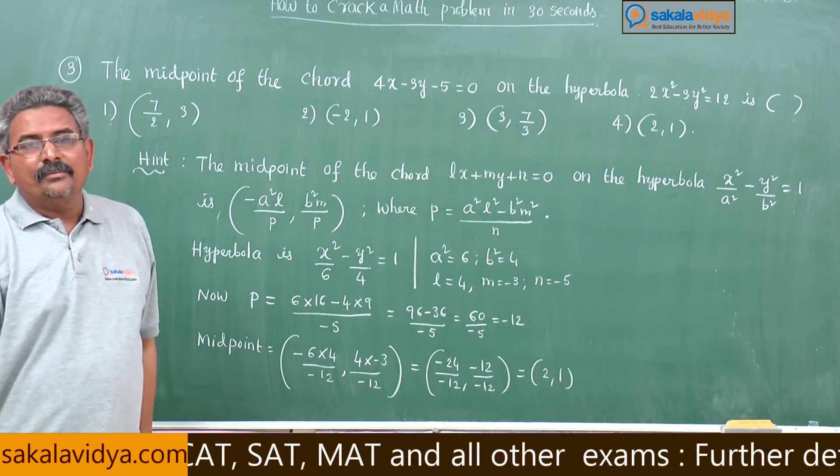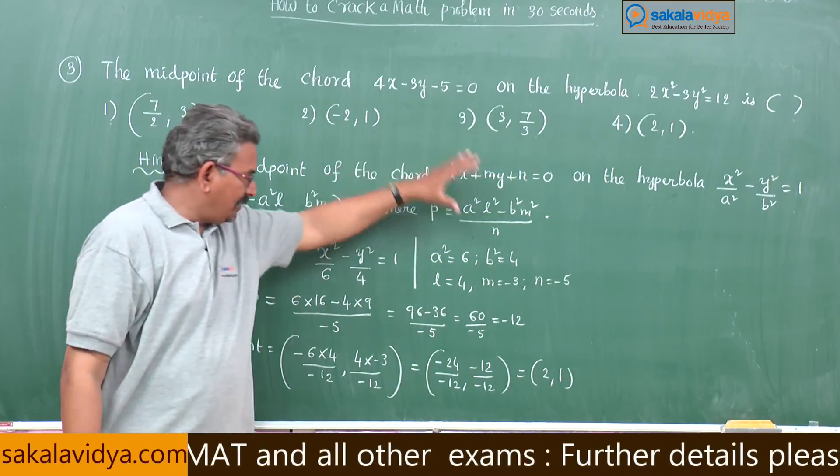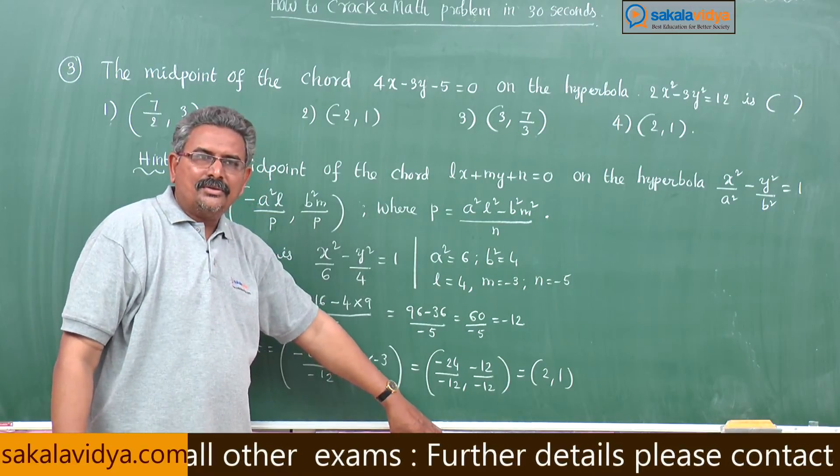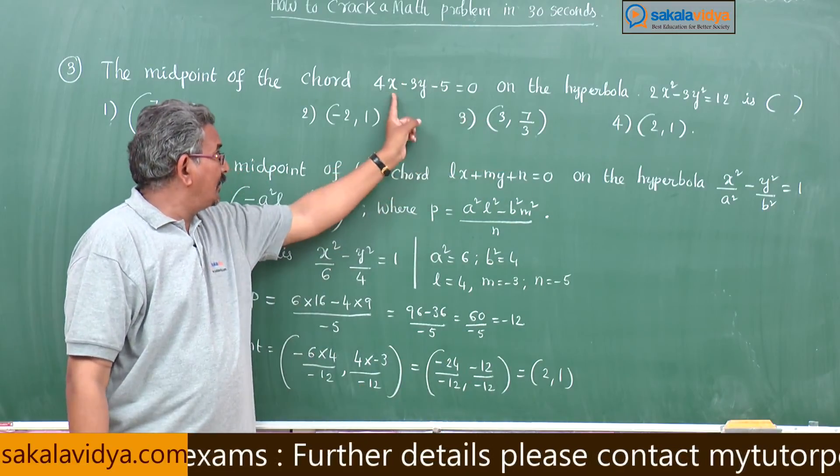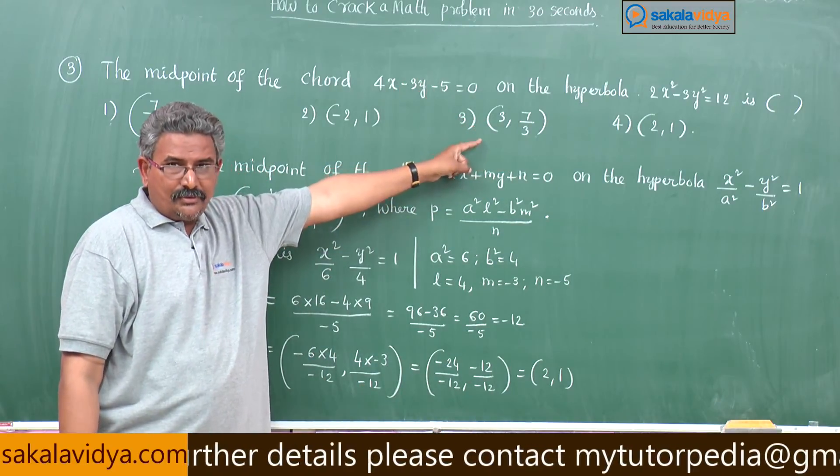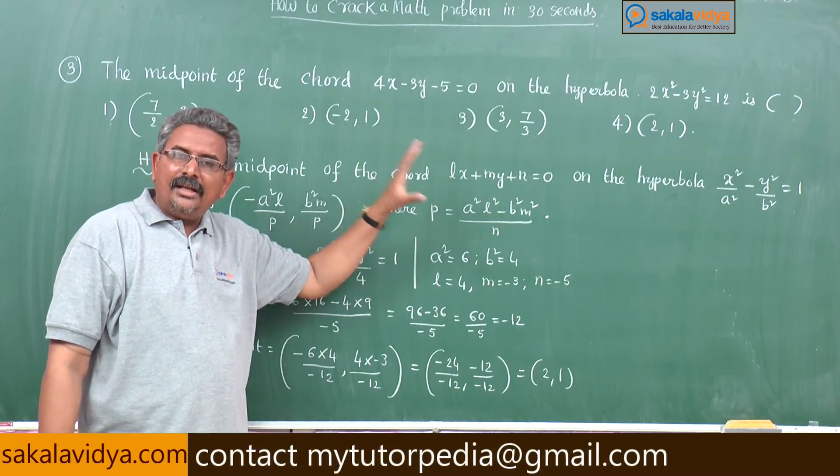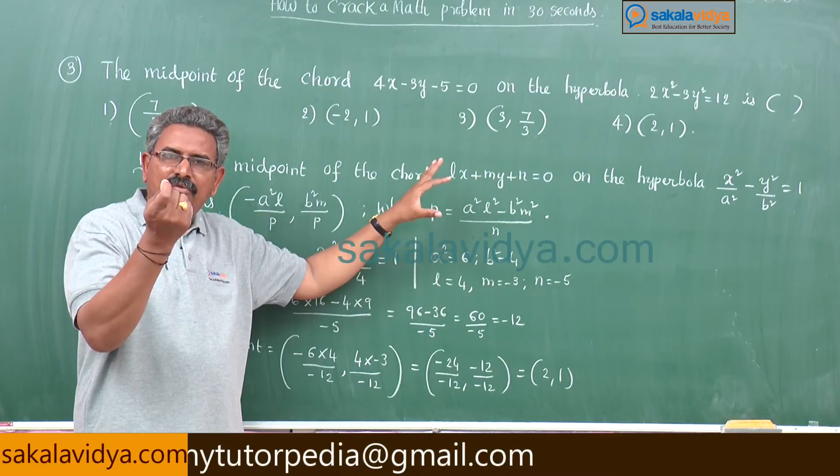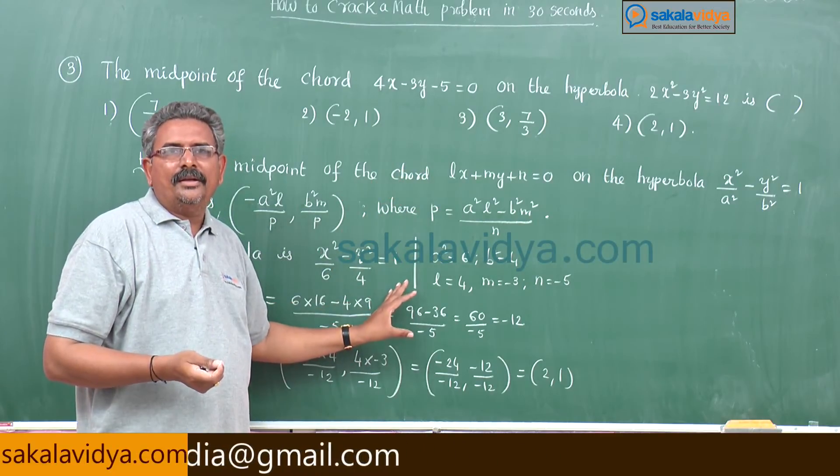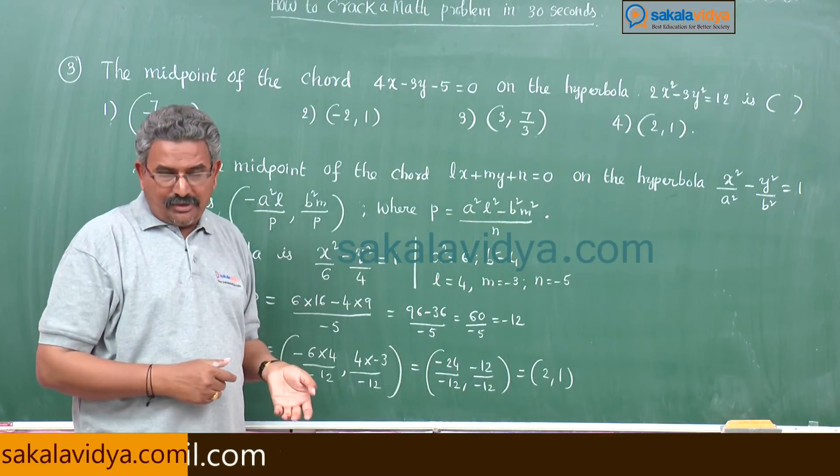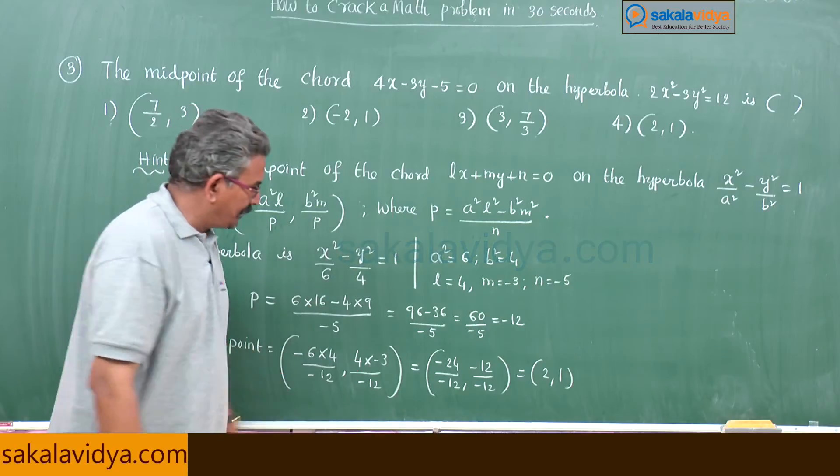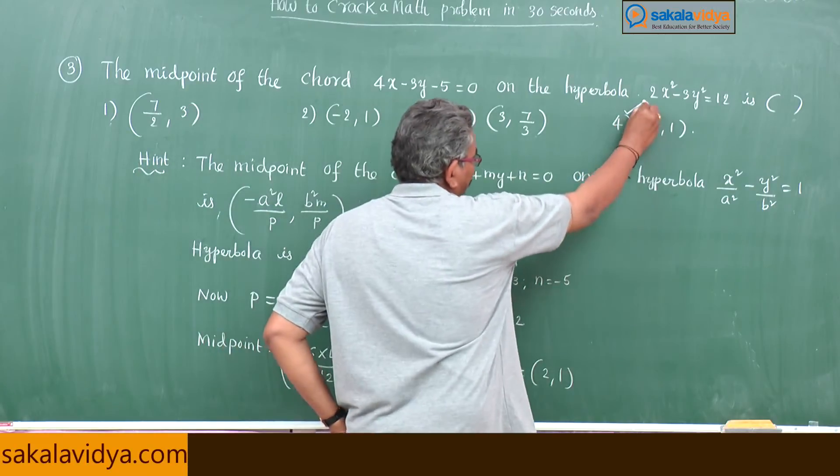So before going to attempt all this method, if you substitute 2 comma 1 in 4x minus 3y minus 5 equals 0, that point satisfies directly also. Within fraction of 1 second also we can solve this problem. But sometimes we may not do it, better you adopt this method. So 2 comma 1 will be the right option.